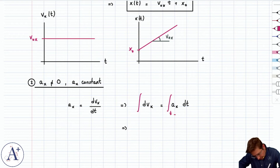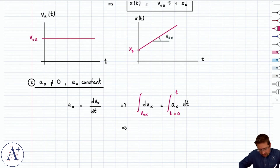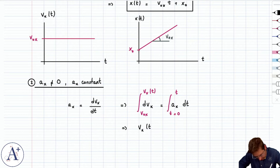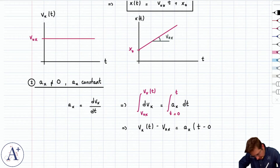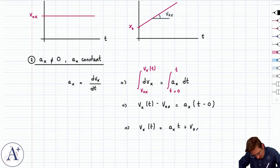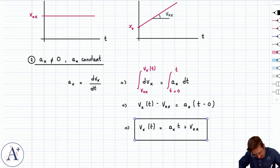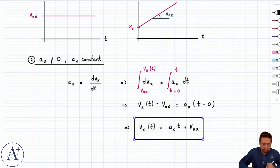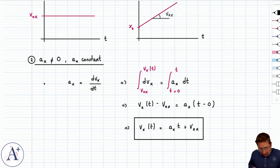Let's separate and integrate like before: dvₓ = aₓ dt. Integrating with respect to velocity on the left and time on the right, the bounds must match. We go from t = 0, at which moment velocity is v₀ₓ, to some arbitrary time t when velocity is vₓ(t). This gives vₓ(t) − v₀ₓ = aₓ · t, which is rewritten as vₓ(t) = aₓ t + v₀ₓ. So now you have a velocity that varies linearly with time, because the acceleration — the derivative of velocity — is constant.